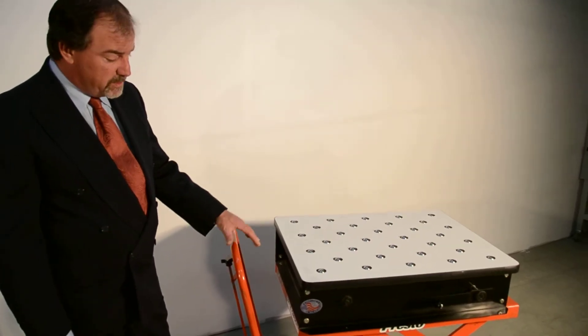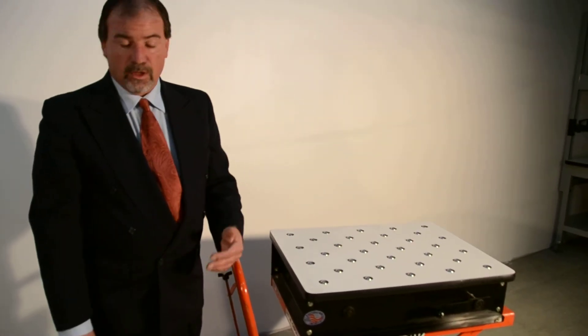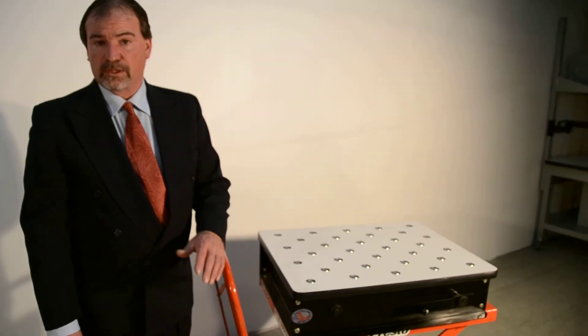Now the nice thing is we do sell these separately. So if you've got a fixed height cart and you always offload and load at the same height, you can just take the mobile retractable ball transfer and mount it onto that unit.